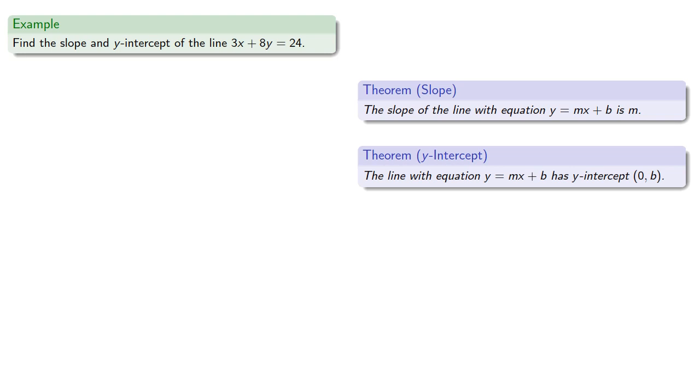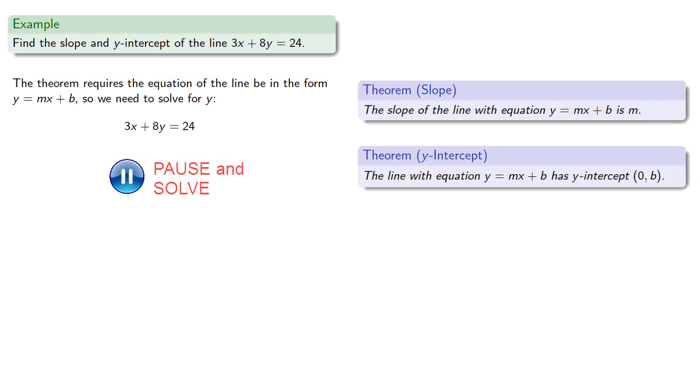So, let's say we want to find the slope and y-intercept of the line 3x plus 8y equals 24. Well, we have a theorem that tells us how to find the slope and y-intercept if our line has the equation y equals mx plus b. And so the theorem requires the equation of the line to be in the form y equals mx plus b, so we need to solve for y. We can do that, so solving for y gives us...